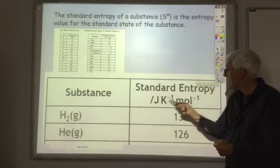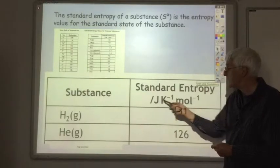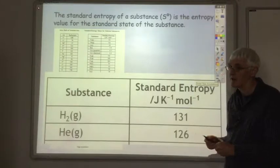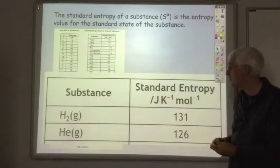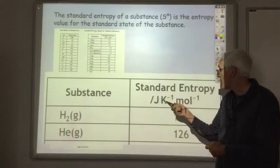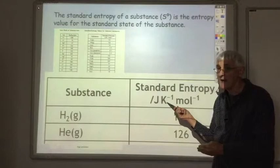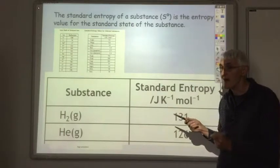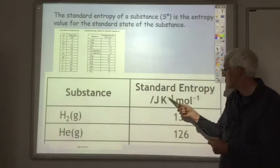The units of entropy are joules per kelvin per mole. Okay, so not kilojoules, that we're used to when we have the enthalpy values, they're always kilojoules per mole. It's joules per kelvin per mole. And note, capital K for kelvin, small k, when you're doing kilojoules. Okay, so joules per kelvin per mole.